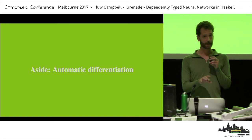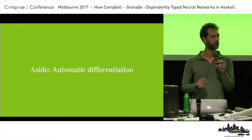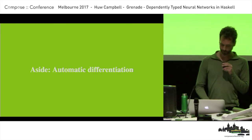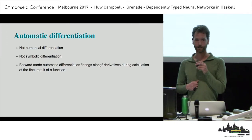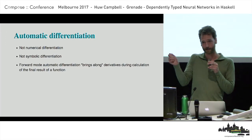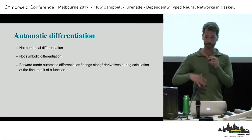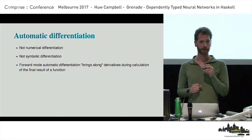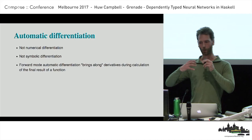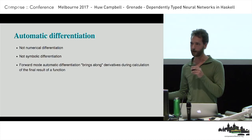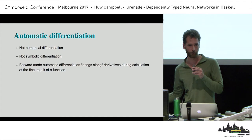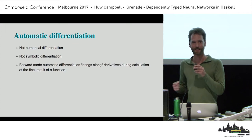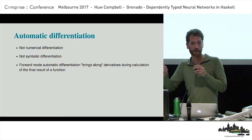A little aside on automatic differentiation. It is not numerical differentiation — you're not just adding a little bit and subtracting a little bit and dividing. It's also not symbolic differentiation, which you all probably did in school. There are two modes. Forward mode essentially means that when you perform each calculation, you're bringing along the derivatives as well — like if I have six and I want to calculate sine of six, I also calculate cosine of six, and then I've got the gradient as well.